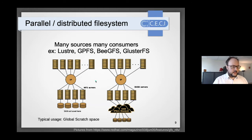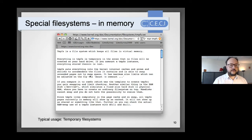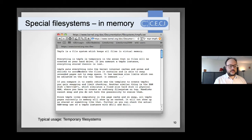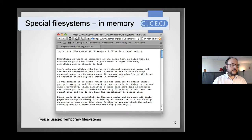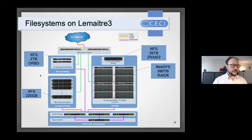Another type is the in-memory file system: tmpfs. It does not reside on disk or a remote server, but in RAM, making it very fast. However, it is volatile — as soon as power is lost, data is gone. If you need a very fast file system for temporary data, tmpfs is a useful option.